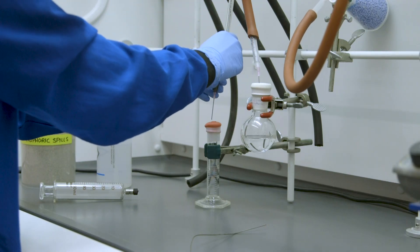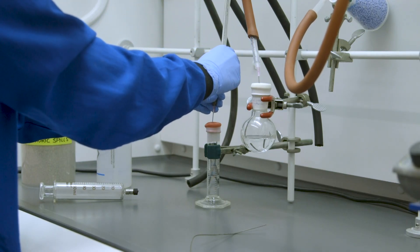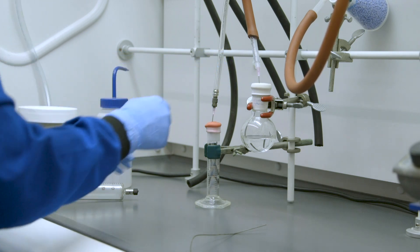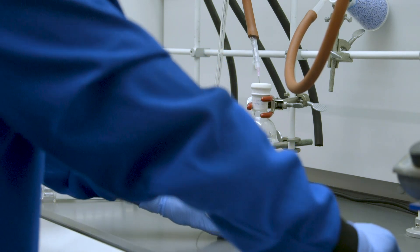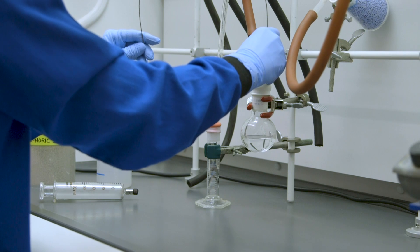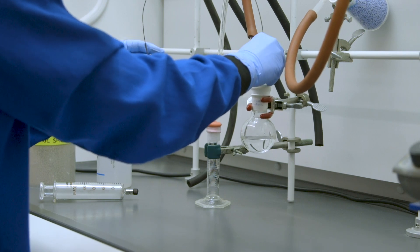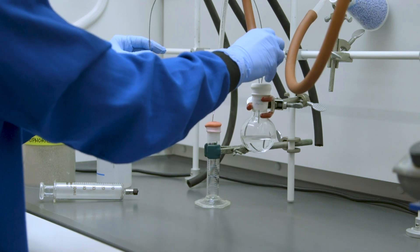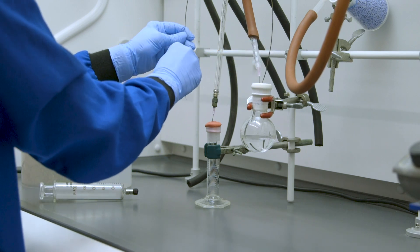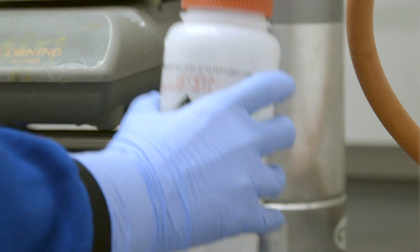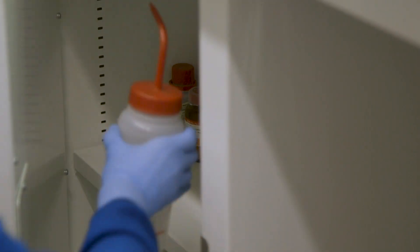The septum will later be pierced with a needle or cannula to transfer the pyrophoric liquid. The reaction solvent and other non-pyrophoric materials are added to the reaction apparatus. Any remaining openings are sealed with an appropriately sized septum or stopper. Any flammable materials not required for the reaction must be capped and removed from the fume hood.